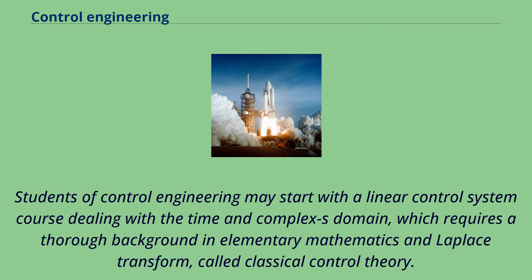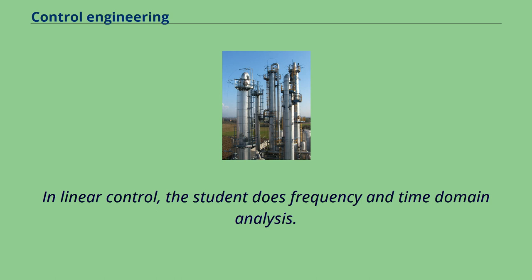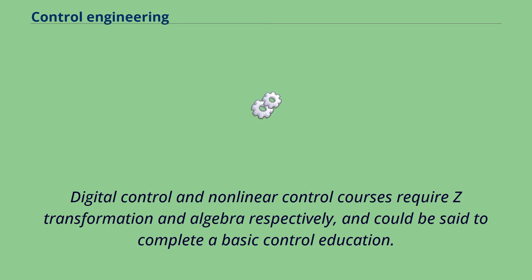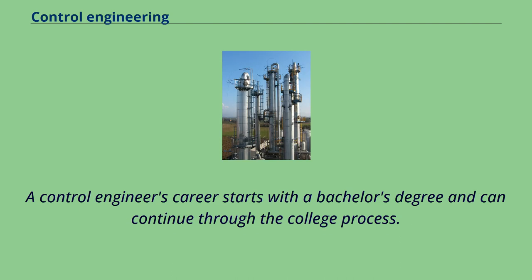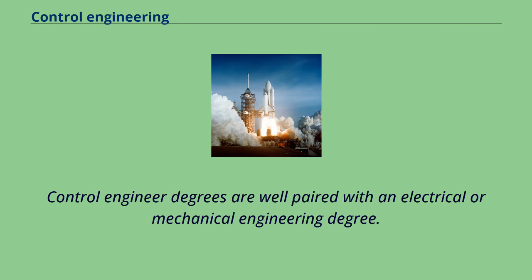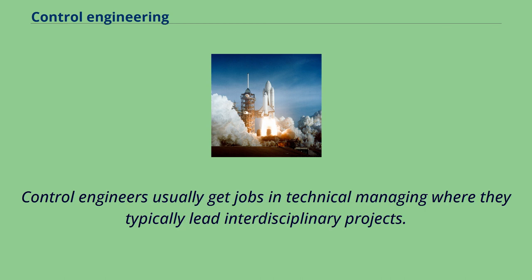Students of control engineering may start with a linear control system course dealing with the time and complex S-domain, which requires a thorough background in elementary mathematics and Laplace transform — called classical control theory. In linear control, the student does frequency and time domain analysis. Digital control and nonlinear control courses require Z-transformation and algebra respectively, and could be said to complete a basic control education. A control engineer's career starts with a bachelor's degree. Control engineer degrees are well paired with an electrical or mechanical engineering degree. Control engineers usually get jobs in technical managing where they typically lead interdisciplinary projects.